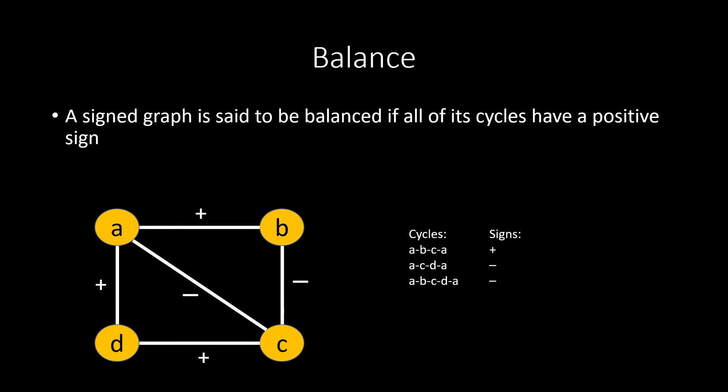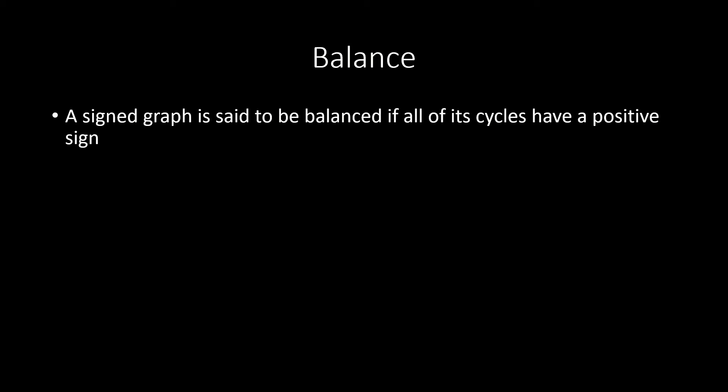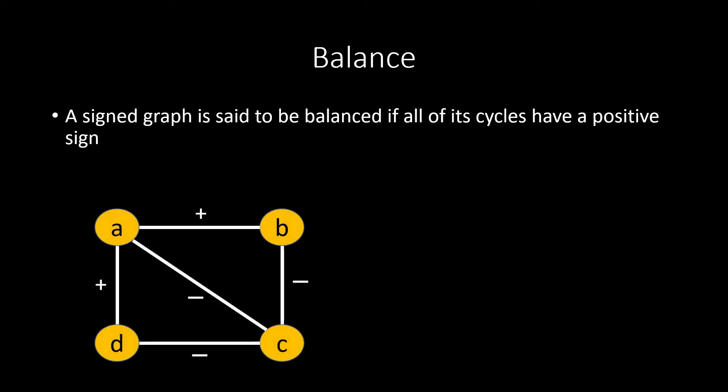This graph is not balanced, because there is at least one cycle that has a negative sign. This graph, however, is balanced, because all of its cycles have positive sign.